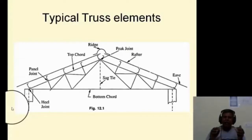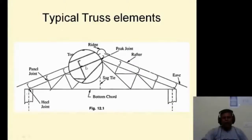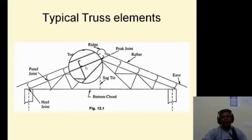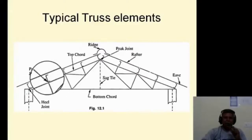All the joints are considered as pinned or hinged, and loads act only at the joints. To analyze the truss, we have different methods available: method of joints, method of sections, tension coefficients, and method of parts.